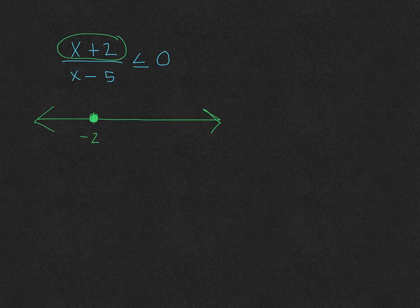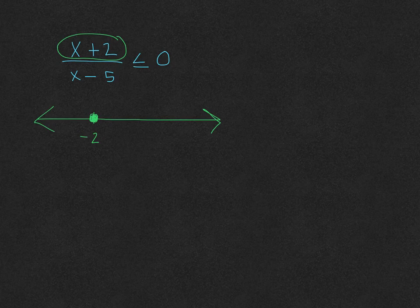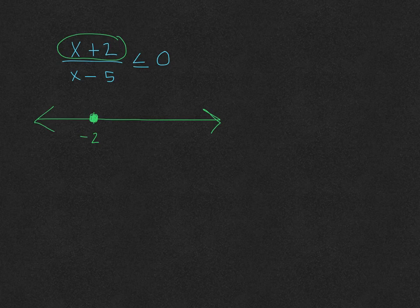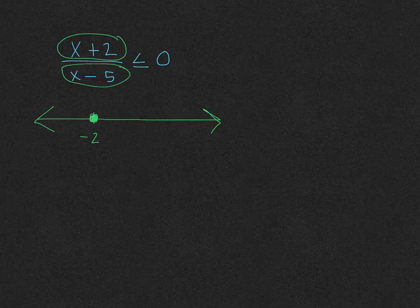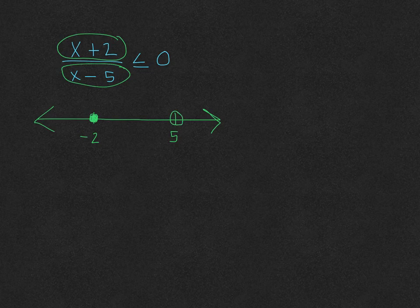Then after we get all of the 0s from the numerator, we're going to find the 0s from the denominator. And 0s from the denominator are very special. Because you can never have 0 in your denominator, the 0s that do come from the denominator are always open. So what makes x minus 5 equal to 0? That would be positive 5. And like I said, it will be open because denominator 0s are always open.